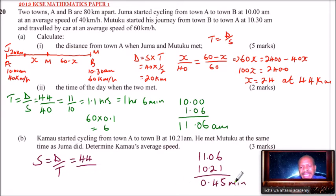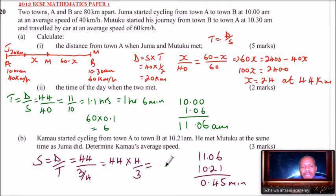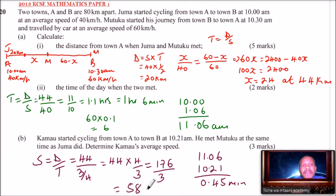45 minutes in terms of hours equals three-quarters of an hour. So speed equals 44 multiplied by 4 divided by 3, which gives 176 divided by 3, equal to 58 and 2/3 kilometers per hour, or approximately 58.67 kilometers per hour.